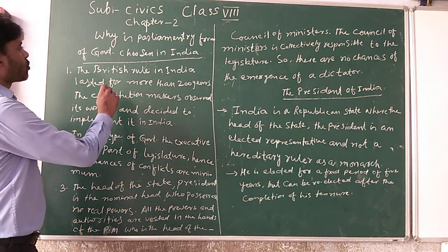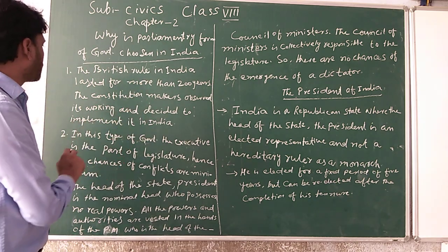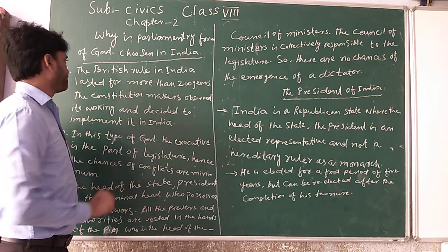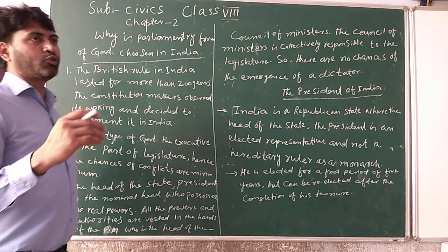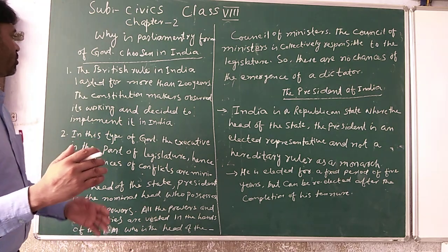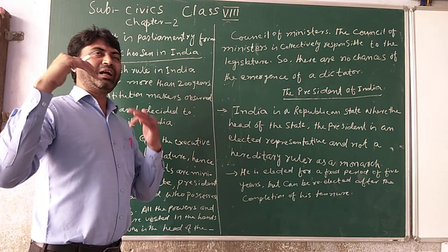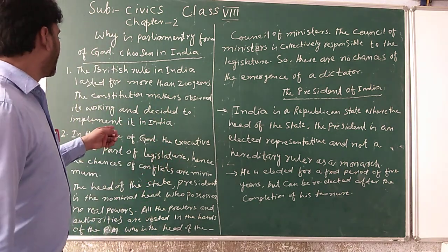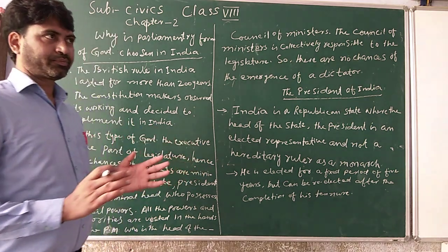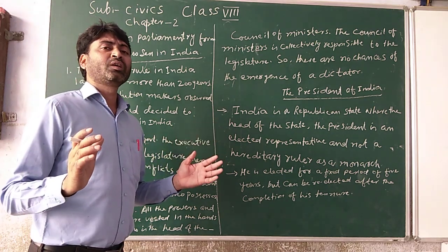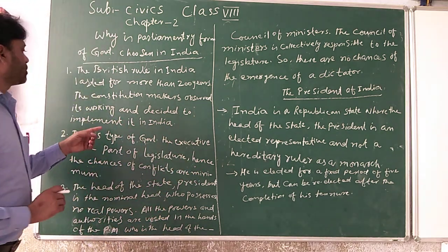See, the first point: the British rule in India lasted for more than 200 years. The framers of our constitution were well acquainted with how the parliamentary system worked and decided to implement it in India. We had almost 200 years of British rule, and our leaders had studied this system in India. So this is the first point.